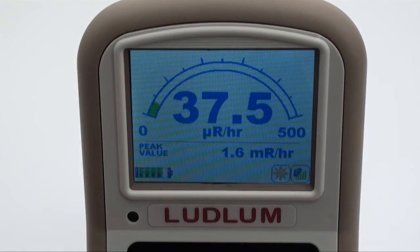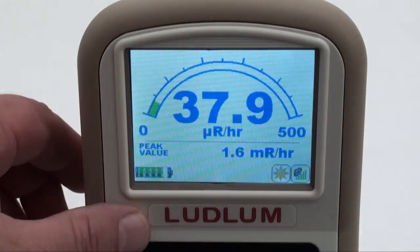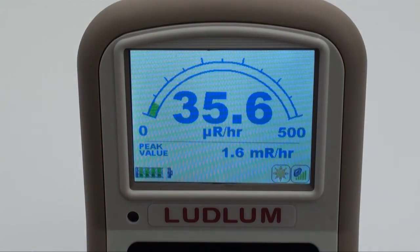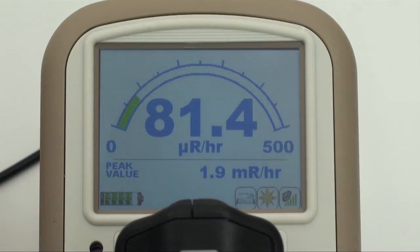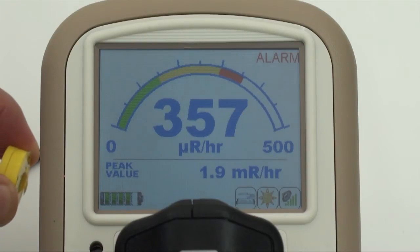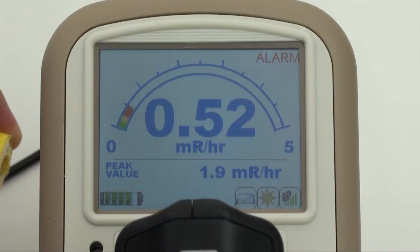The readout is displayed on a sunlight-readable color LCD that automatically adjusts the backlighting for ambient conditions. The bitmap color display and fast processor facilitates an easy-to-read, auto-ranging graphical display accompanied by large numerical readouts and displays two separate measurements simultaneously.